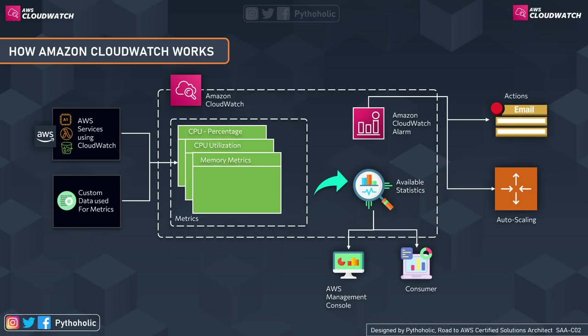Let us understand this scenario. We have our AWS services and let's suppose I'm using an EC2 instance and I want to measure the CPU utilization, based on which I would like to create an alarm that sends a notification to users. So if there is a peak in CPU utilization and the application is going to crash, I want to send an email notification. Let's see how this can be done.